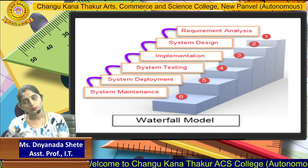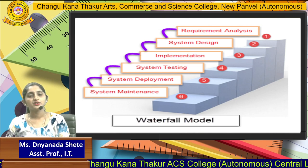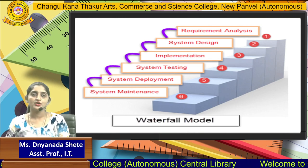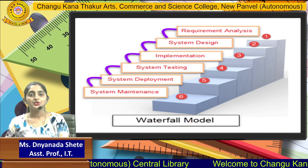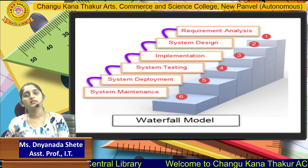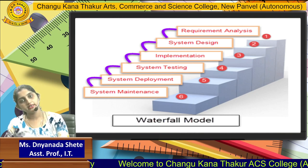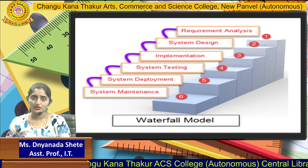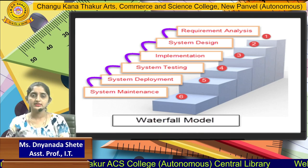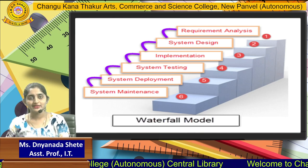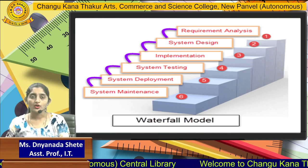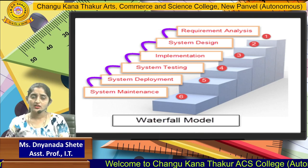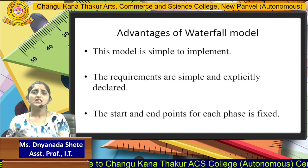After system testing comes system deployment. In this phase your actual software is completed and it will be used by the stakeholder. Once deployment is completed, the maintenance phase begins. Maintenance means when your software is in running or in-use mode, the system maintenance will maintain all the things in your software.